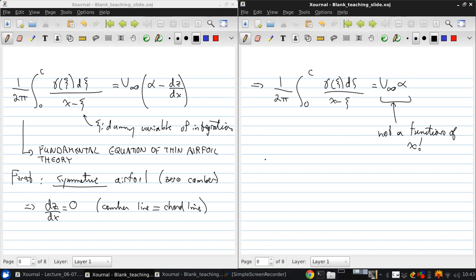So I won't go through the details, but to solve this integral equation, we make the following transformation: c equals c over 2, 1 minus cos theta. So c equals zero at theta equals zero, and c equals c, the chord, at theta equals pi.